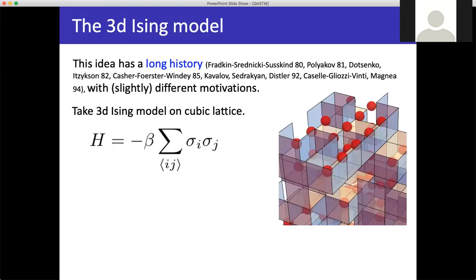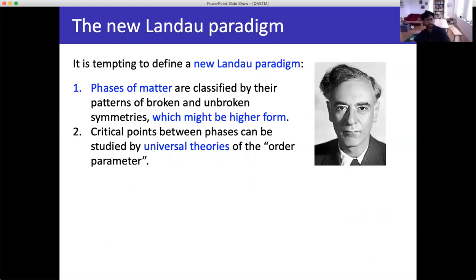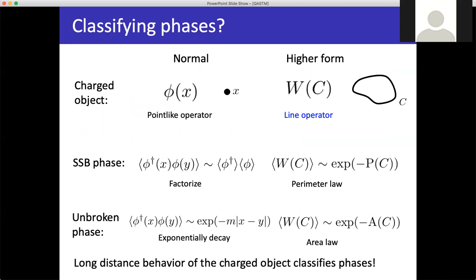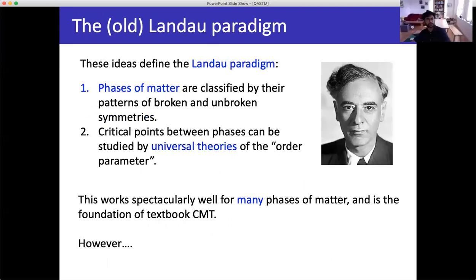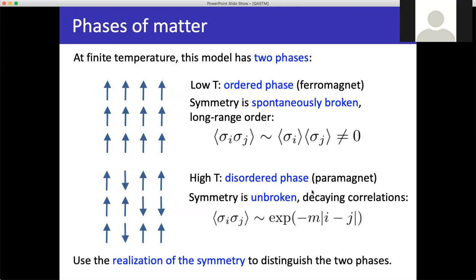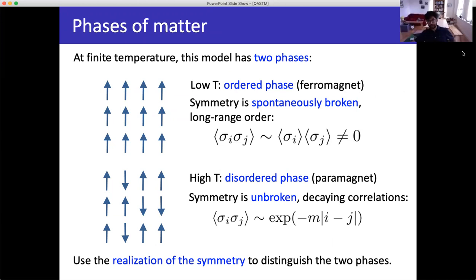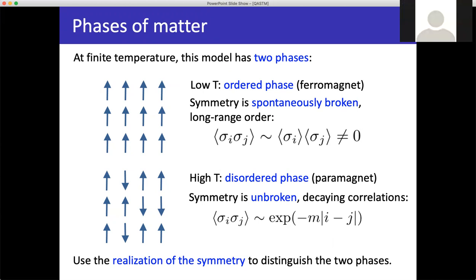On the question of spontaneous symmetry breaking: the Hamiltonian is definitely symmetric. However, by spontaneous symmetry breaking I mean exactly this — the ground state of the Hamiltonian breaks the symmetry, even though the Hamiltonian is symmetric. In the low-temperature ferromagnetic phase, all spins point up: sigma equals +1. But the symmetry flips sigma, so sigma = +1 is different from sigma = -1. This ground state breaks the symmetry — that's all I mean. The non-trivial fact is this is possible even though the Hamiltonian is symmetric.